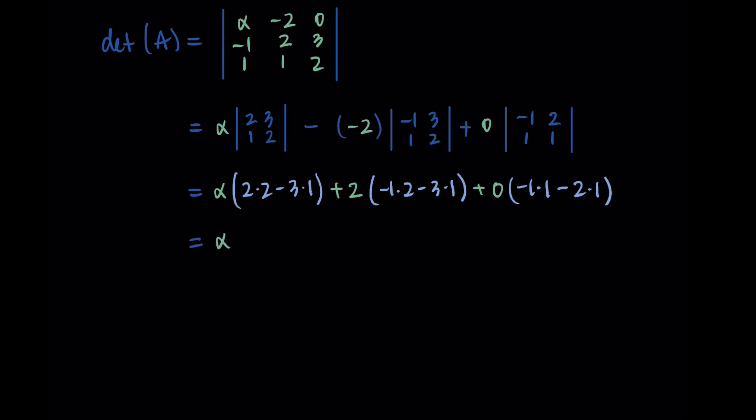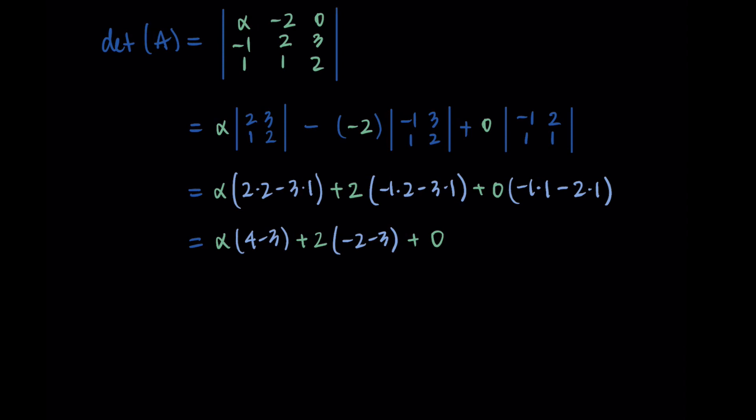Now we just continue simplifying. So I'm getting alpha times 4 minus 3 plus 2 times negative 2 minus 3 plus 0. So I'm getting alpha times 1 plus 2 times negative 5, which is alpha minus 10. All right, so we found my determinant of my matrix.